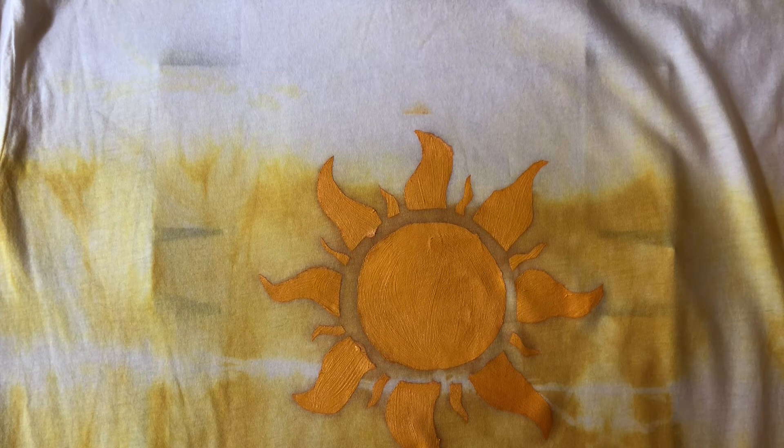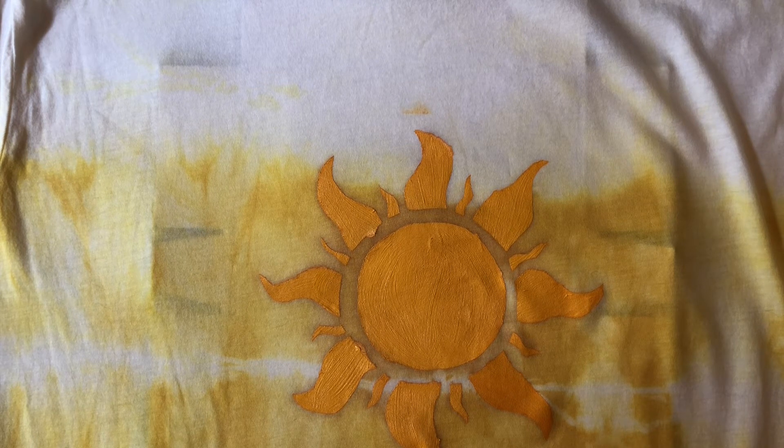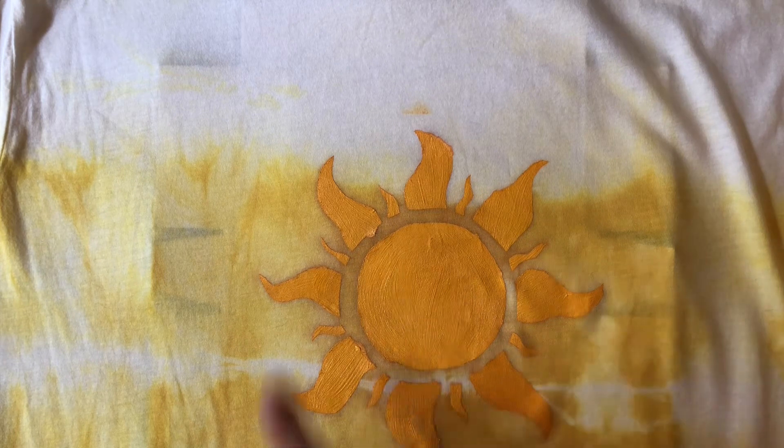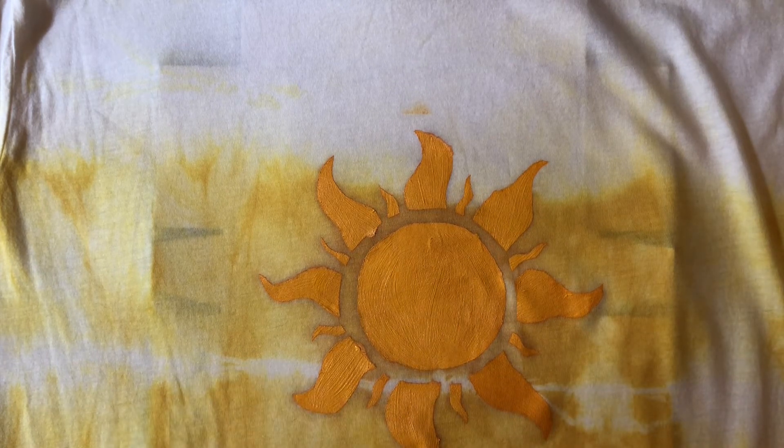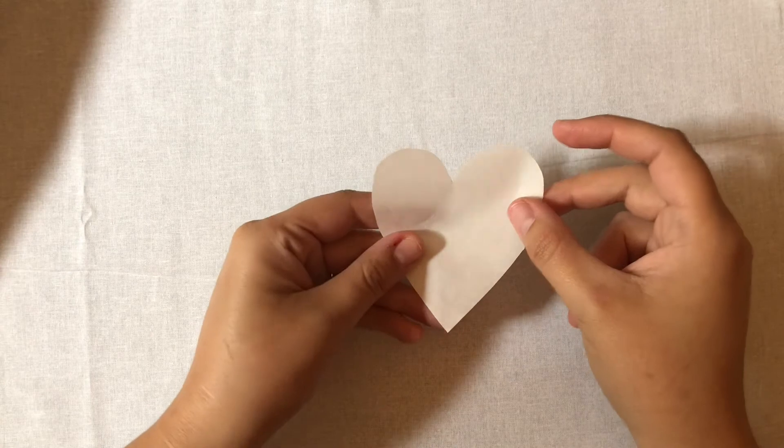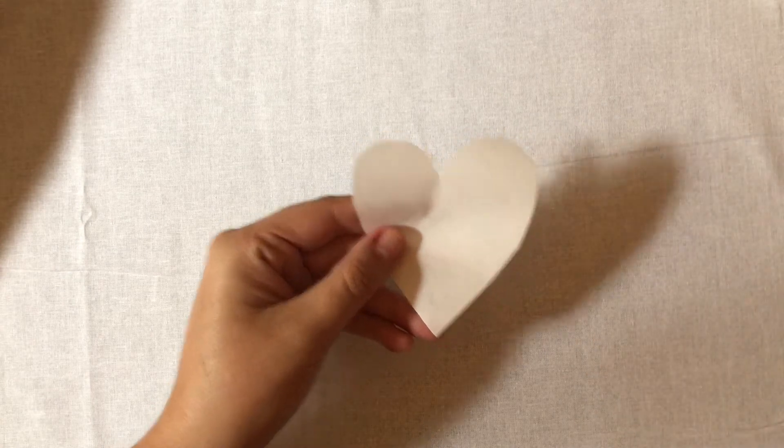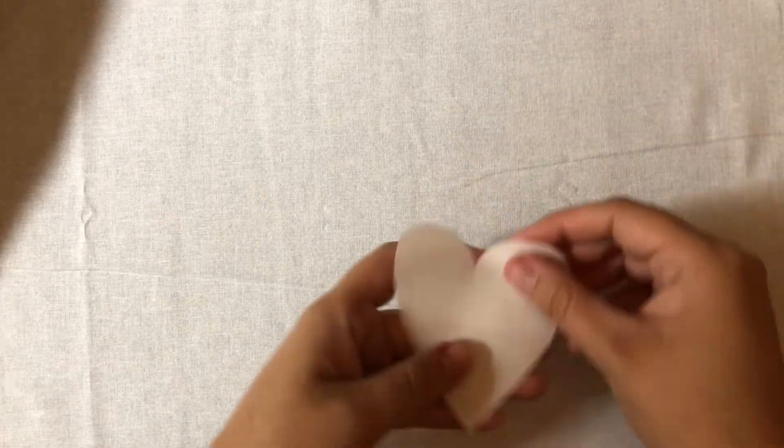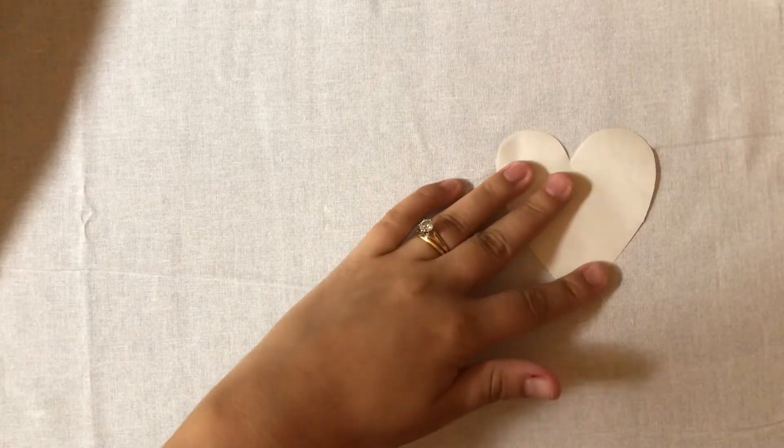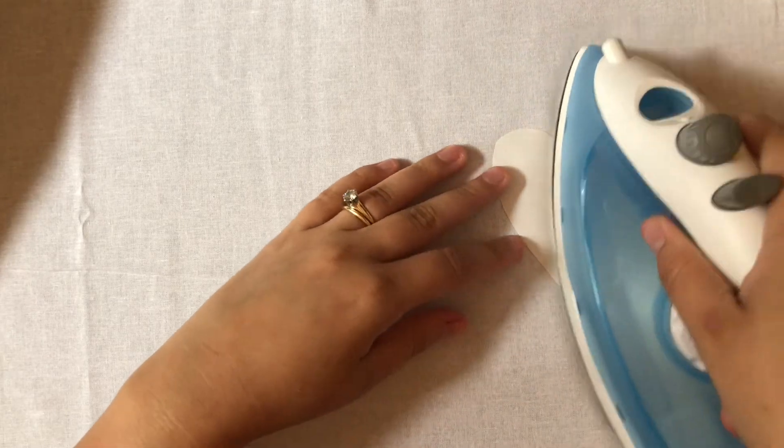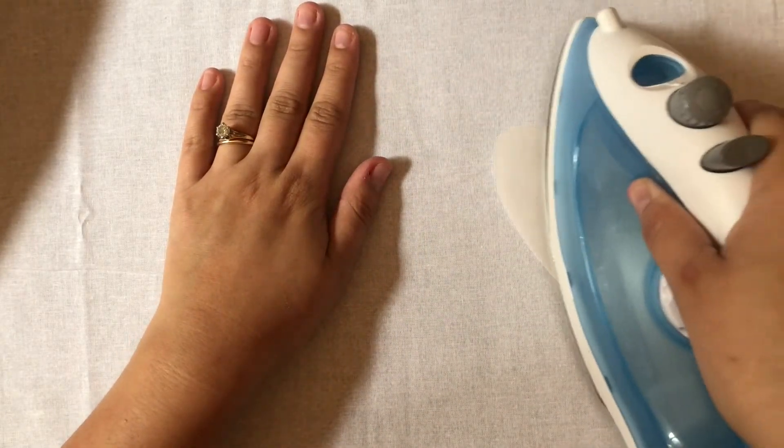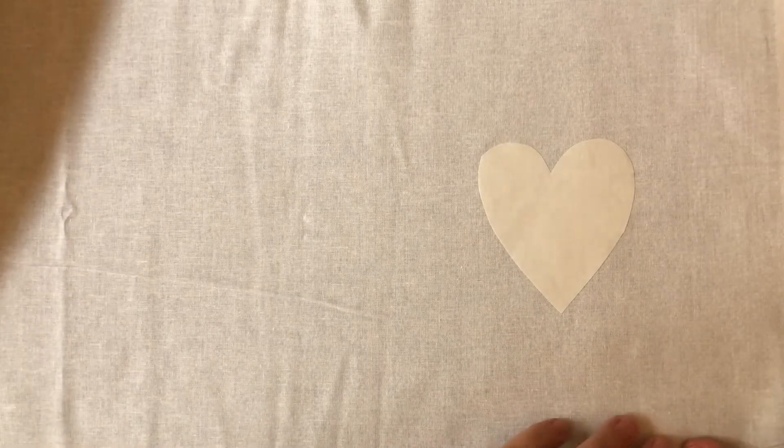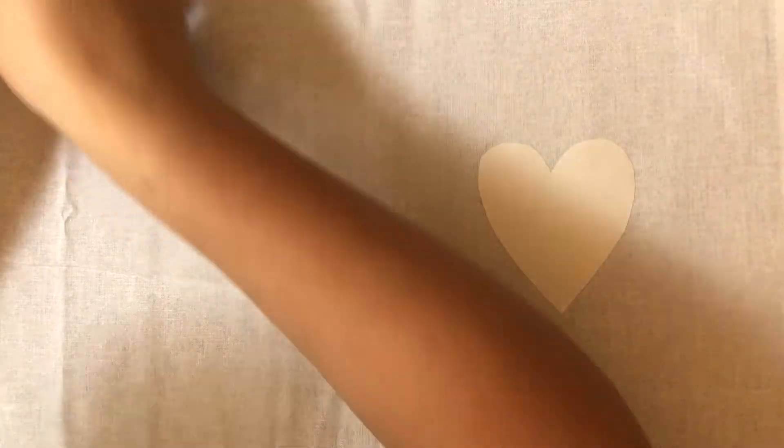We're going to knock through two other kinds of designs you can think about. One of them is going to be the negative image. So rather than having kind of the space where we want color to be cut out, we have that inside shape cut out so we can iron on just a little piece. So we've got this one on here. I'm going to transfer this on top of a piece of scrap paper first.